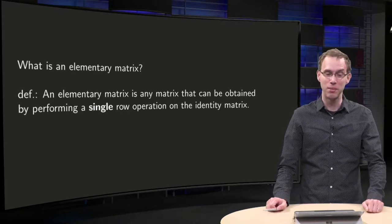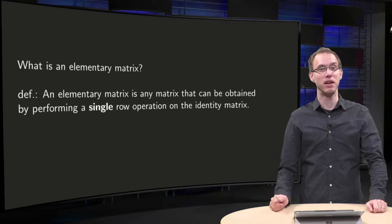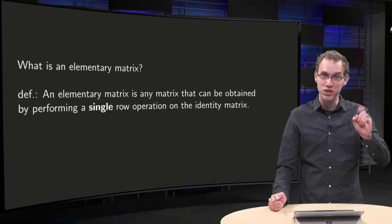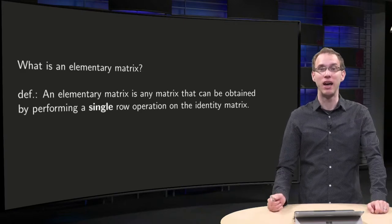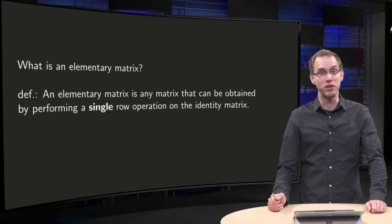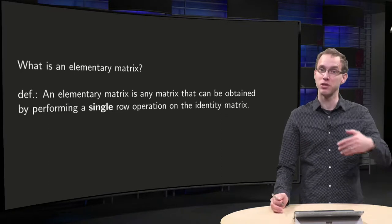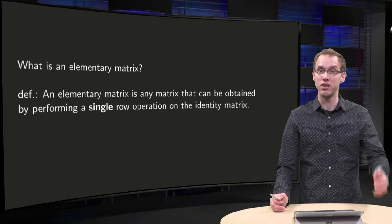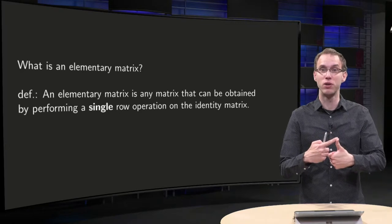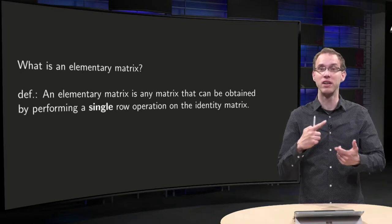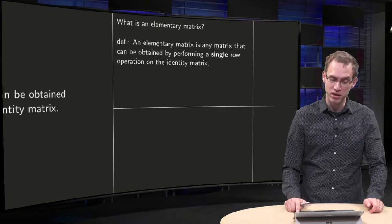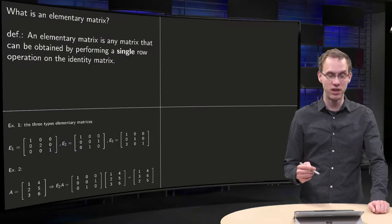What is an elementary matrix? Take the identity matrix — any identity matrix — perform one single row operation and you obtain an elementary matrix. This means in particular that all elementary matrices are square matrices, because they are obtained from the identity matrix via a single row operation. We have three different row operations: multiplication of a row with a nonzero factor, interchanging two rows, and adding a multiple of one row to another row. So this also means that we will find three types of elementary matrices.